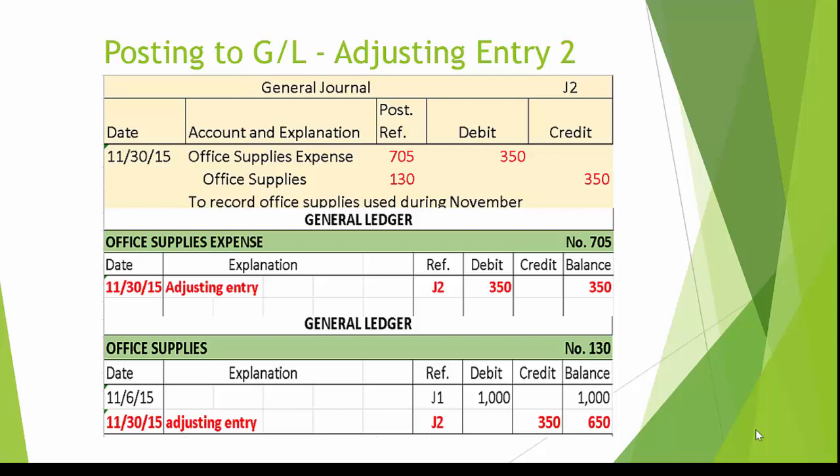Adjusting entry number 2 records office supplies used during November. Again, the debit for office supplies expense is entered in the general ledger account 705. Notice the general ledger account 705 is entered in the posting reference column of the general journal.